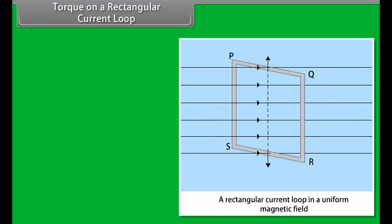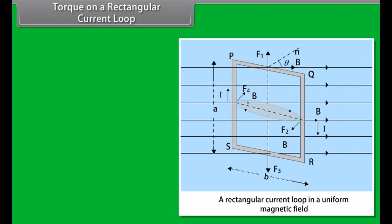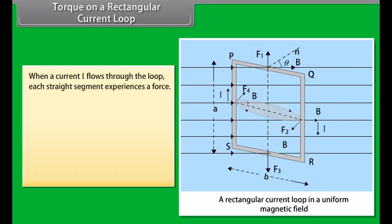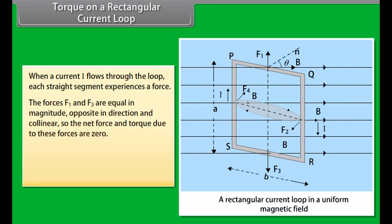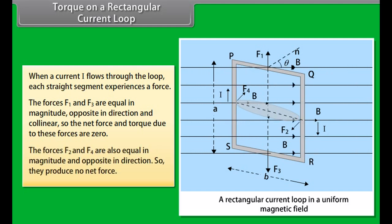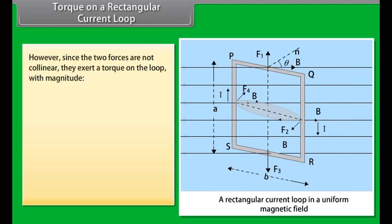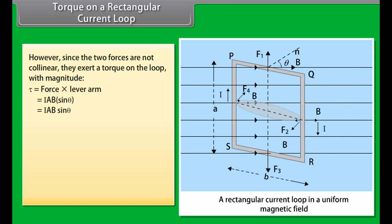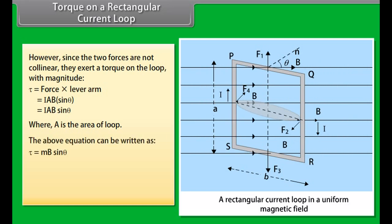Torque on a rectangular current loop: Consider a current carrying rectangular loop PQRS of sides A and B placed in an external uniform magnetic field B. The normal to the plane makes angle theta with B. When current I flows, each segment experiences a force. Forces F1 and F3 are equal, opposite, and collinear — net force and torque are zero. Forces F2 and F4 are equal and opposite but not collinear, so they exert a torque of magnitude IAB sin theta. This can be written as Tau = MB sin theta.